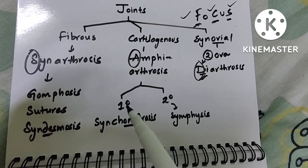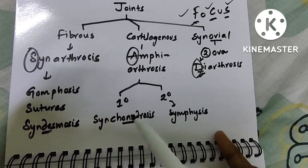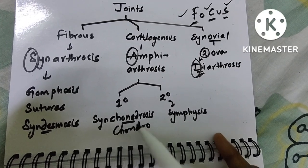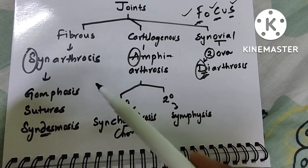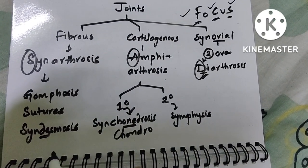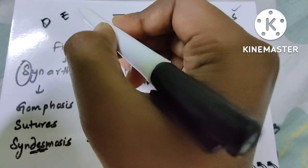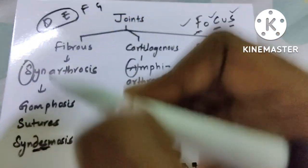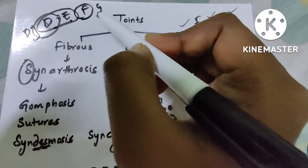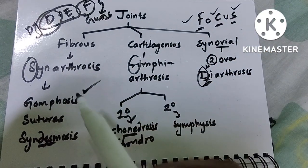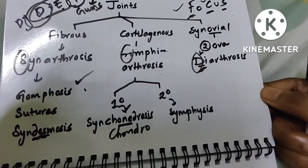Now divide cartilaginous into primary and secondary. Primary cartilaginous joint is otherwise called synchondrosis, and secondary is symphysis. For fibrous joints, gomphosis, sutures, and syndesmosis belong here. Remember it as D-E-F-G: syndialysis is D-E, and it is a fibrous joint; G is gomphosis. So fibrous contains syndialysis, syndesmosis, gomphosis, and sutures.